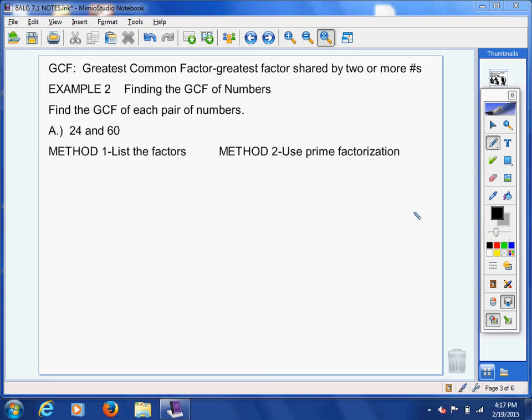We're in example two now, still in section 7.1. Now we're going to talk about finding the greatest common factor, the GCF. That is the absolute biggest number that's shared by two or more numbers. This is going to be a skill that we need to use, and we're going to use some of the skills we built in example one to help us get there.